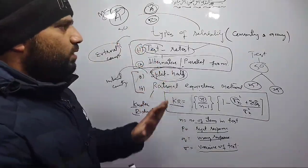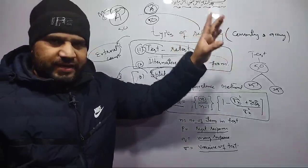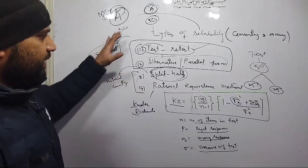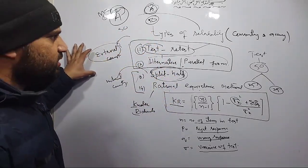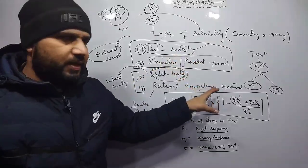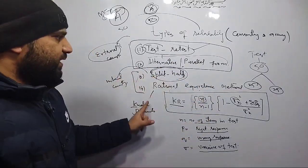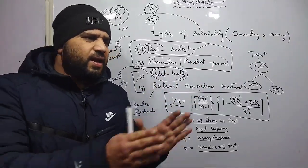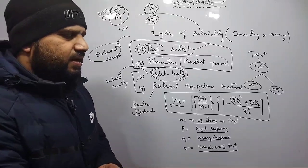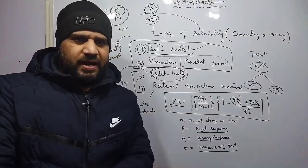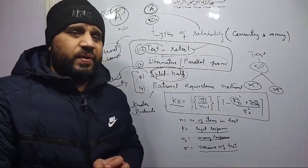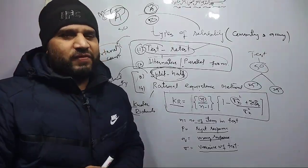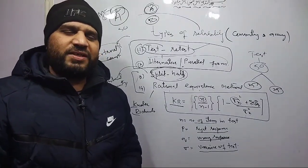So by this we have completed types of reliability. Reliability means consistency and accuracy. We studied coefficient of reliability. There are two categories: external consistency — which includes test-retest and alternate parallel form — and internal consistency — which includes split-half method and rational equivalence method. There is also Cronbach's method, but you don't need to remember that much. For now these four are what you need. I hope you enjoyed the video — please like, share, and comment. Thank you, may Allah bless you and keep always learning.